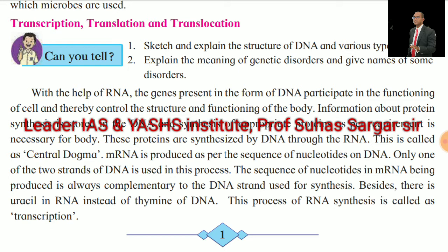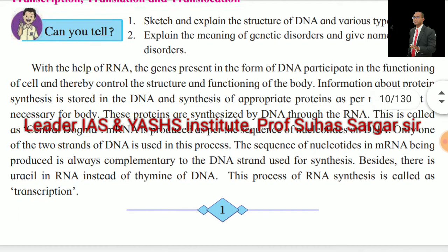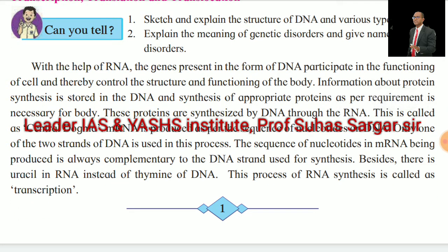This is called the central dogma. mRNA is produced as per the sequence of nucleotides on DNA. Only one of the two strands of DNA is used in this process. The sequence of nucleotides in mRNA being produced is always complementary to the DNA strand used for synthesis. There is uracil in RNA instead of thymine of DNA. This process of RNA synthesis is called transcription.